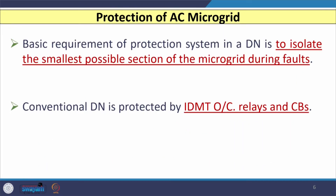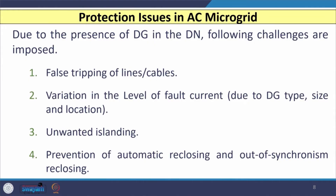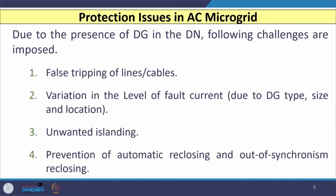The basic requirement of any protection system for a distribution network is to isolate the smallest possible section of the microgrid during a fault. Conventional distribution networks use inverse definite minimum time overcurrent relays with circuit breakers, and coordination between relays, reclosers, and fuses is well established because the network is radial. However, when distributed energy resources like solar and wind are introduced, power flow becomes bidirectional, and relay coordination may be partially or completely lost.